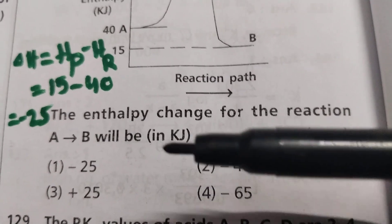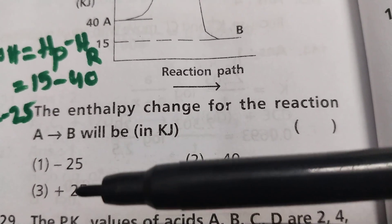The enthalpy change for the reaction A to B will be minus 25. Option 1 is the right answer.